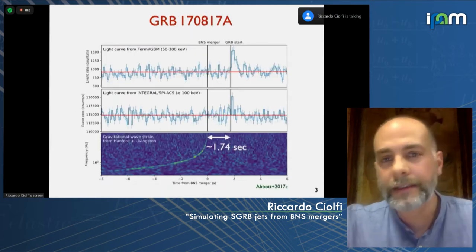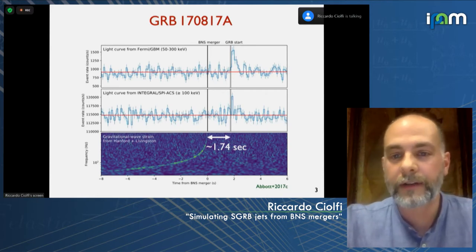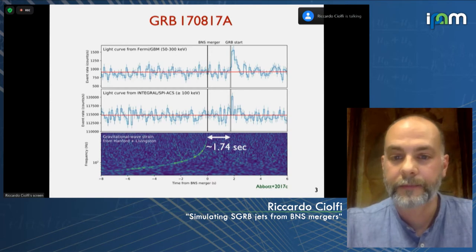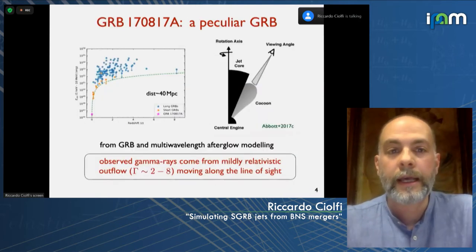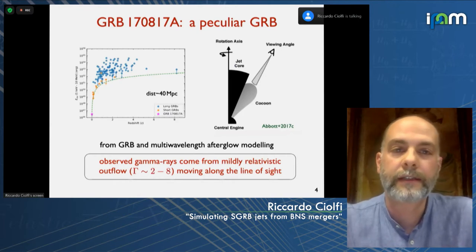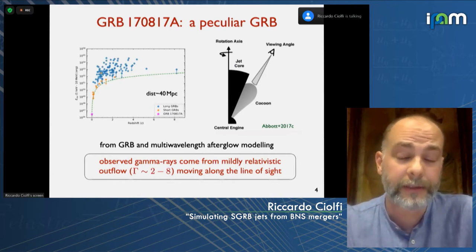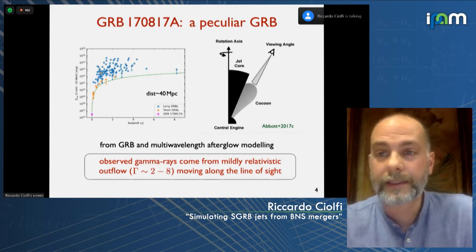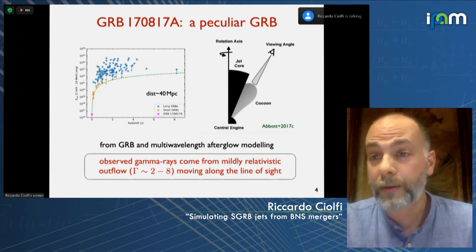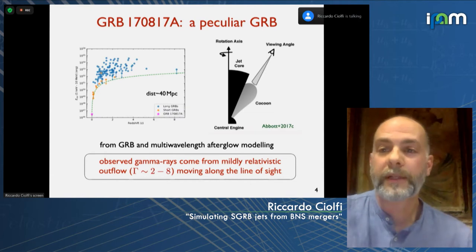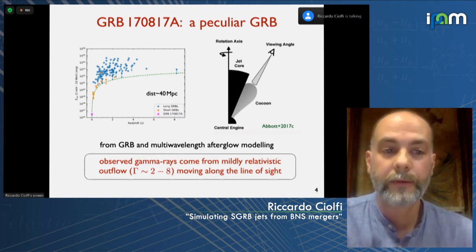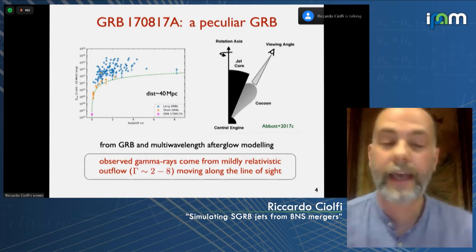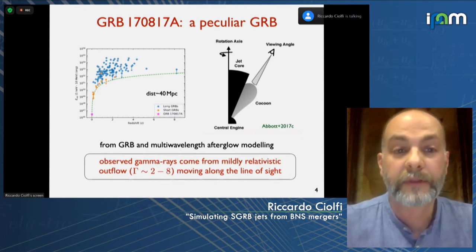The signal GRB170817A was seen by Fermi and INTEGRAL 1.74 seconds after the merger time estimated from the gravitational wave signal. Without considering the event's distance, this looked marginally consistent with a short gamma-ray burst. But accounting for the 40 megaparsec distance, this resulted peculiar — orders of magnitude less energetic than other known short gamma-ray bursts. On the energy-redshift plot, the pink star representing our event sits far below all other short gamma-ray bursts.